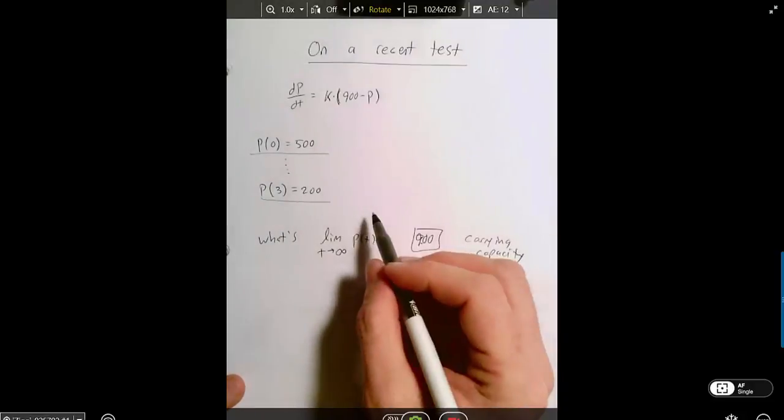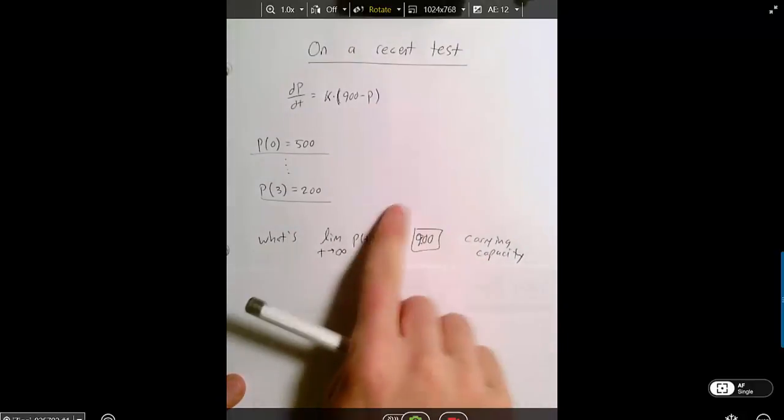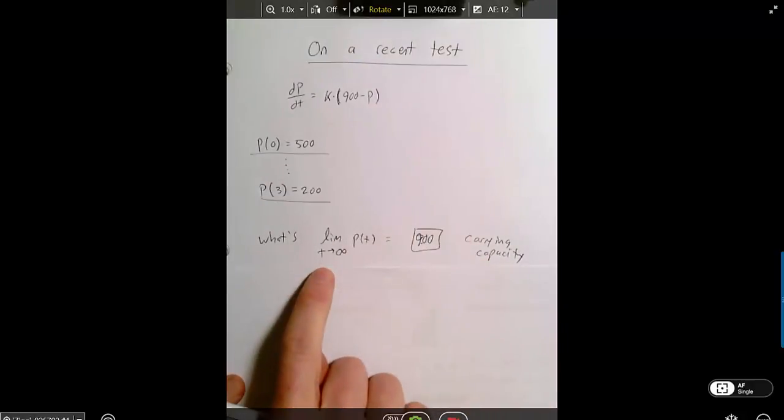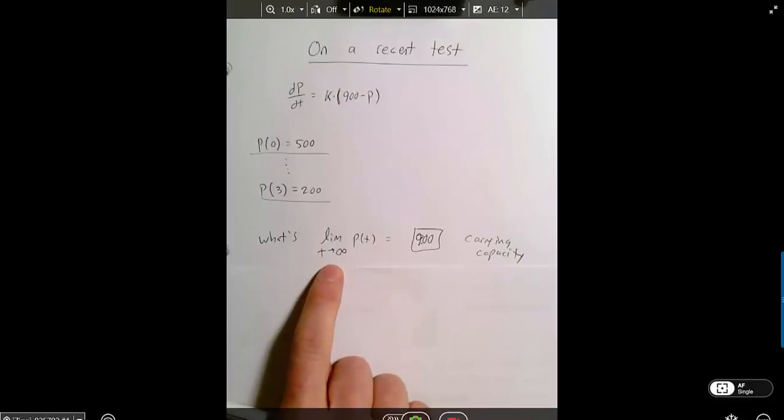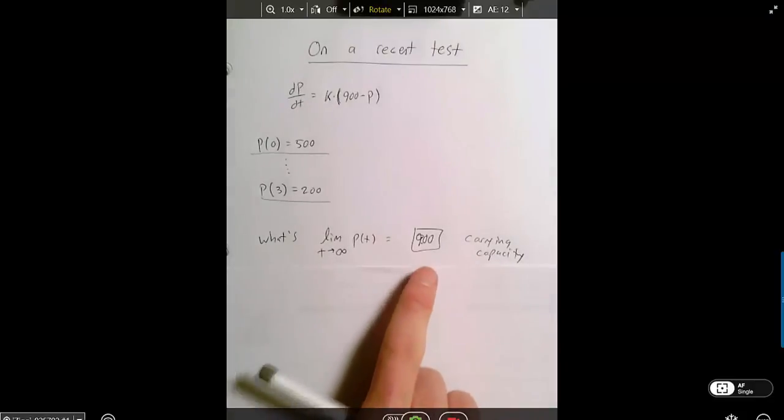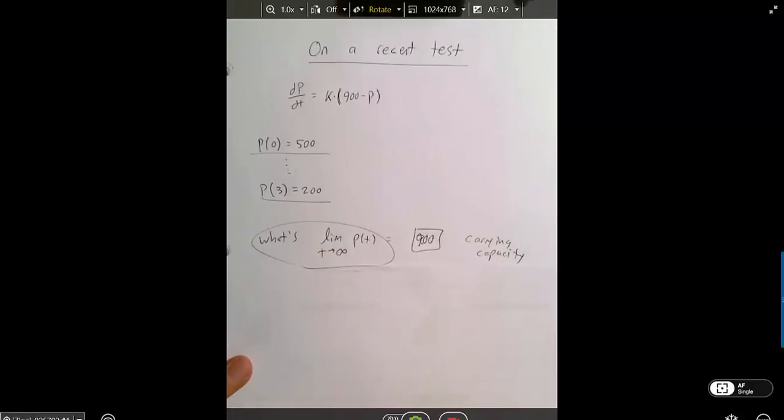A lot of people even had an equation where if you actually looked at the limit, it was going to show you that the population was decreasing, not increasing, but yet you wrote 900 anyway. And I'm having trouble explaining this to myself in any other way, except that when you saw this, you thought, nailed it, I got this one, and you didn't actually think about what was going on in the problem.